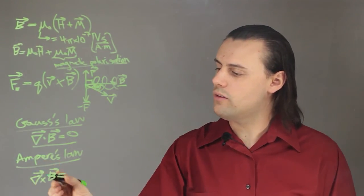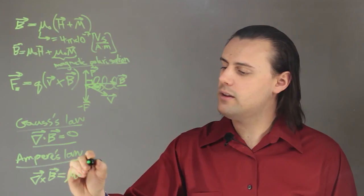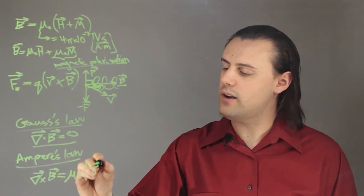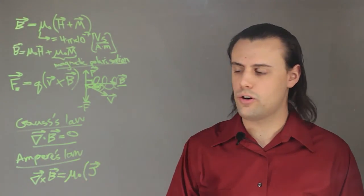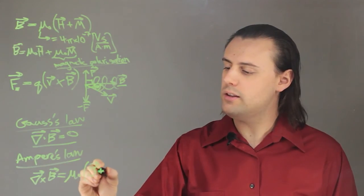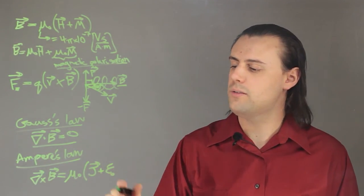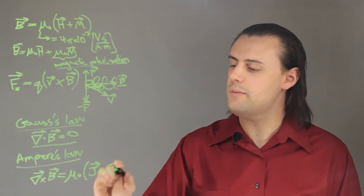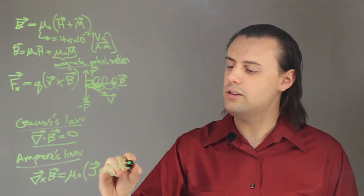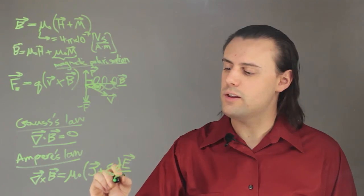And this describes the curl of the magnetic field. And the curl of the magnetic field is equal to mu naught times j vector, this is the total current density, plus epsilon naught, which is the permittivity of free space, as opposed to the permeability, times the time derivative of the electric field.